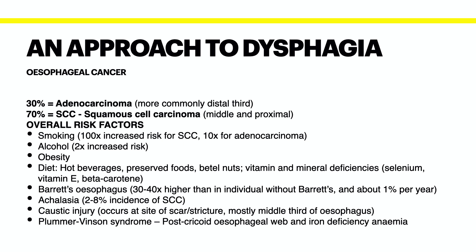In terms of risk factors for esophageal cancer, the most important is smoking, which shows a 100-fold increased risk for squamous cell carcinoma and a 10-fold increase for adenocarcinoma. Alcohol gives patients a two times increased risk. Other important risk factors are obesity, which is generally related to reflux and increases adenocarcinoma incidence, and diet — patients drinking hot beverages or eating preserved foods, chewing betel nuts (typically in East Asia), and vitamin and mineral deficiencies in selenium, vitamin E, and beta-carotene.